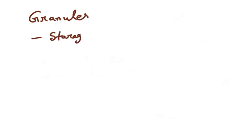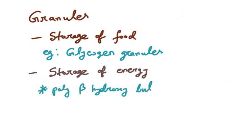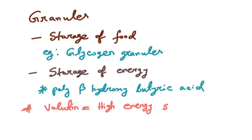Now let's talk about granules. Granules are actually two types. Some may be storage of food which are the glycogen granules most commonly, and some may be the storage of energy, of which most common is the poly-beta-hydroxybutyric acid. And some granules are known as the volutin which are also very high energy storage.